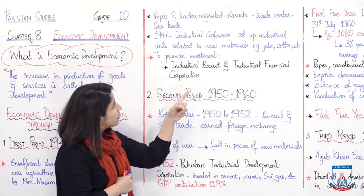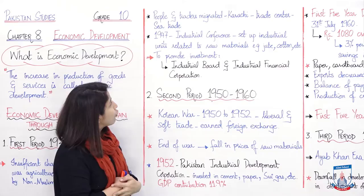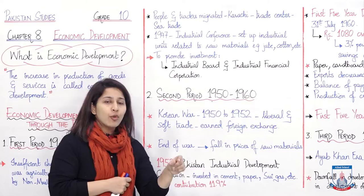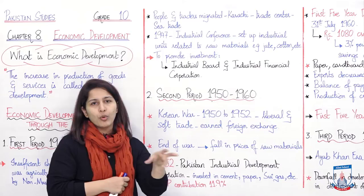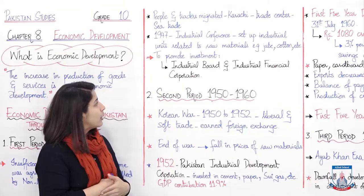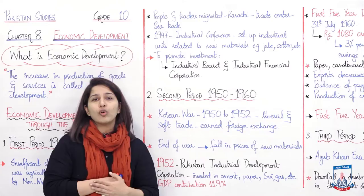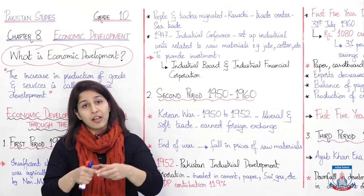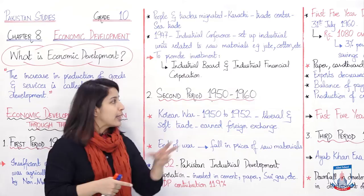1947 mein ek industrial conference conduct ki gai. Is conference mein decide kiya gaya ke there would be industrial units set up related to raw materials — example: jute, cotton, leather etc. Yeh industrial units woh honge jo raw material pe base karti hongi. To promote investment aur economy behter banane ke liye, industrial board and industrial financial corporation was set up. Initial three years mulk apne aapko sambhalne ki koshish kar raha tha — economy develop ho rahi thi, kuch administration handle ki, kuch boards banai, kuch financial corporations banai.